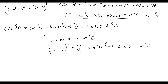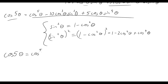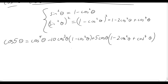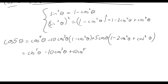Now we have those two substitutions for sin²θ and sin⁴θ, so we can substitute them back into the formula and expand the brackets. The right-hand side becomes: cos⁵θ minus 10cos³θ times (1 − cos²θ), which gives cos⁵θ minus 10cos³θ plus 10cos⁵θ. Then plus 5cosθ times (1 − 2cos²θ + cos⁴θ), giving plus 5cosθ, minus 10cos³θ, and plus 5cos⁵θ.